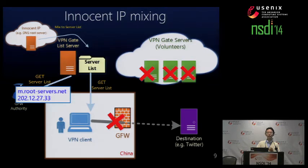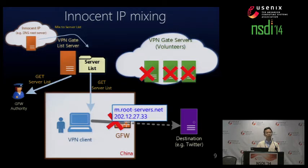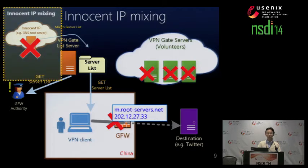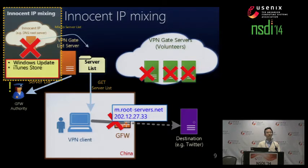If those IP addresses are inserted into the Great Firewall, any users from mainland China will not be able to access those innocent IPs. Other good examples of innocent IP addresses are Windows Update servers, iTunes Store servers, and Gmail mail exchange servers — vitally important servers.